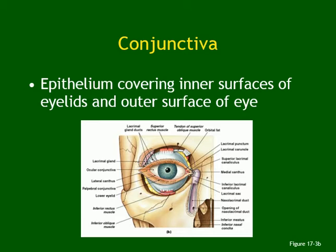Part of the conjunctiva covers the white of the eye, covering the sclera, and then it reflects and lines the palpebra. So there are two parts: the part on the white is called the ocular conjunctiva, and the one that reflects on the eyelid from inside is called the palpebral conjunctiva.